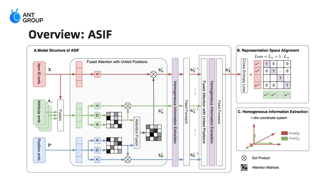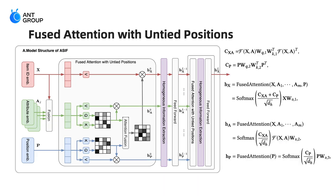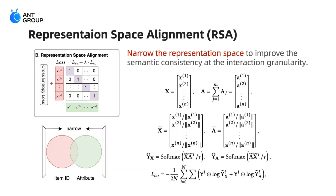The method consists of fused attention with untied positions and representation alignment. According to Figure 1, position encoding has a weak relationship with ID and attributes, which may not be suitable to be fused with others. So we develop fused attention with untied positions, which decouples the correlation metric for position encodings and fuses the attention calculation for ID and attributes.